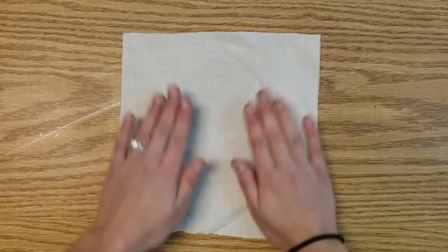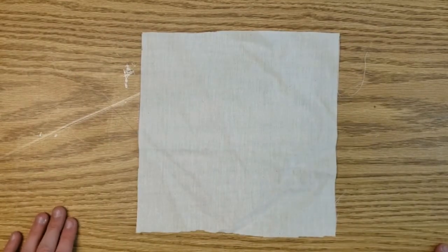This is called the scrunch, or it's also known as kumo, which is the technical name for it.